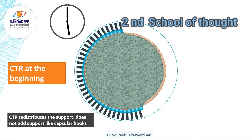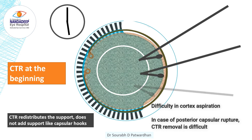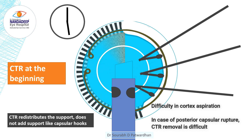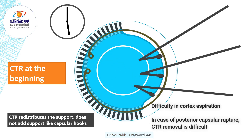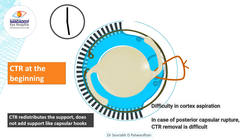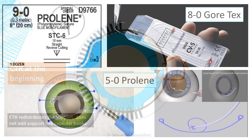The second school of thought is that we should put CTR in the beginning so that it supports the bag right from the start. But we must note that CTR just redistributes the support and does not actually add support like the capsular hooks, so in case of advanced zonular subluxation it may not be useful. Also it is difficult to release the cortex which is trapped under the capsular hooks, and if there is a posterior capsular rupture during the procedure, the CTR removal is quite difficult. So I usually follow the first school of thought.